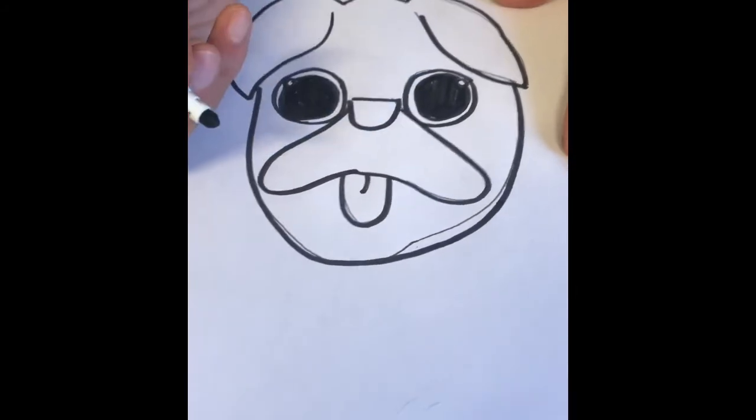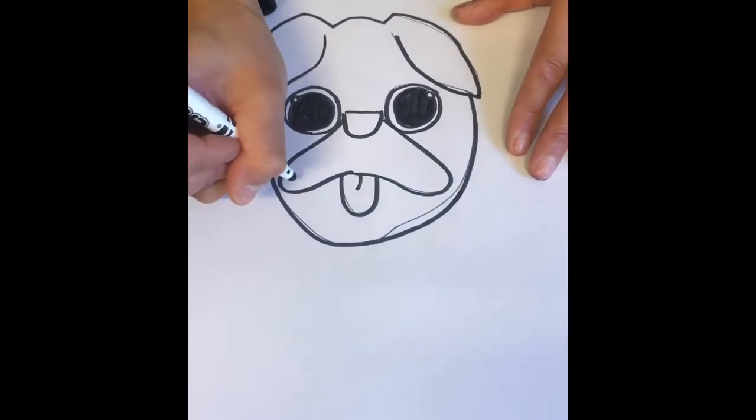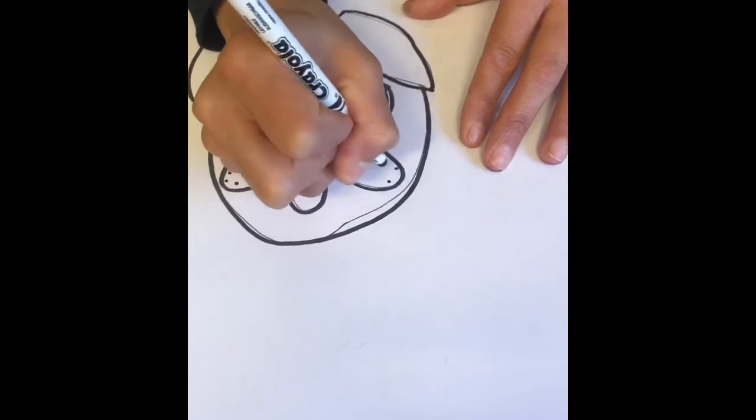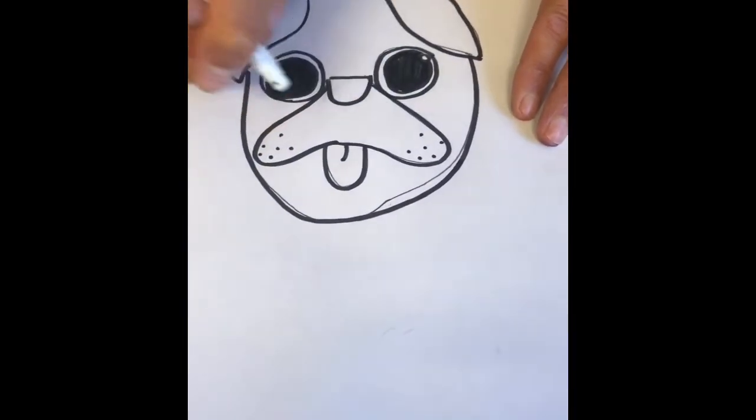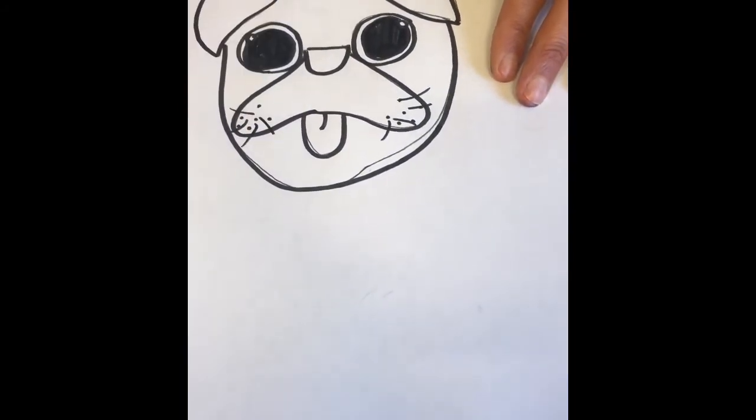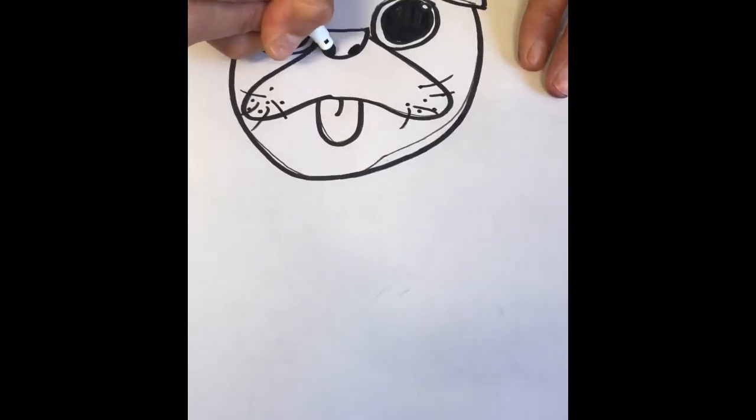I'm going to draw the last bit which is the dots, which is actually how the dogs breathe. You can have some whiskers on it as well because pugs have whiskers, a bit like a cat. I'm going to draw some nostrils where their nose is.